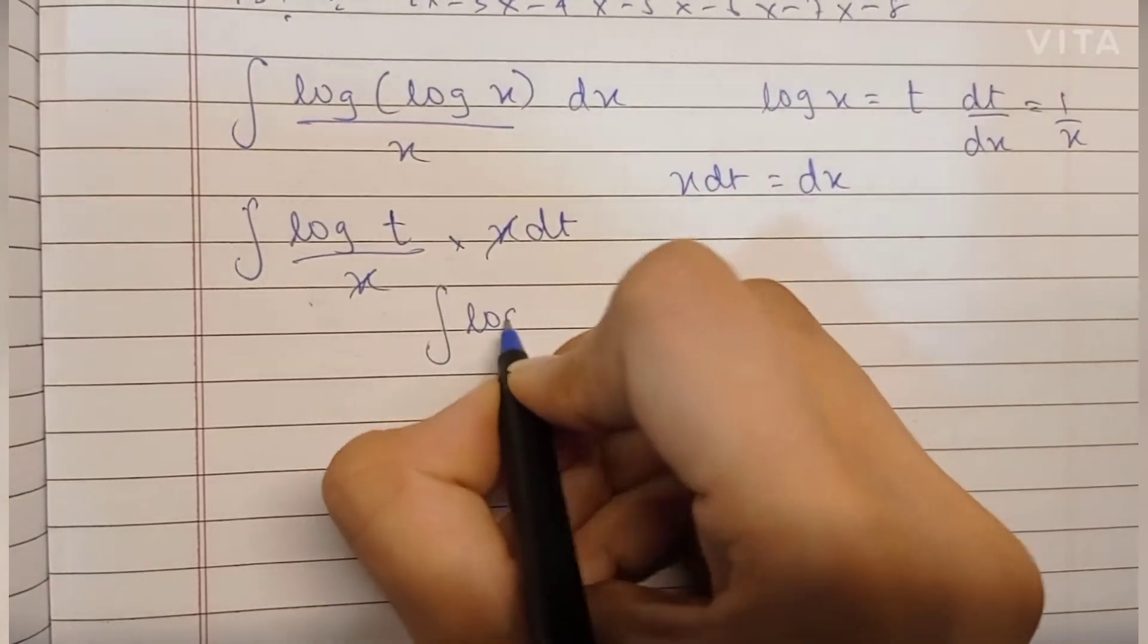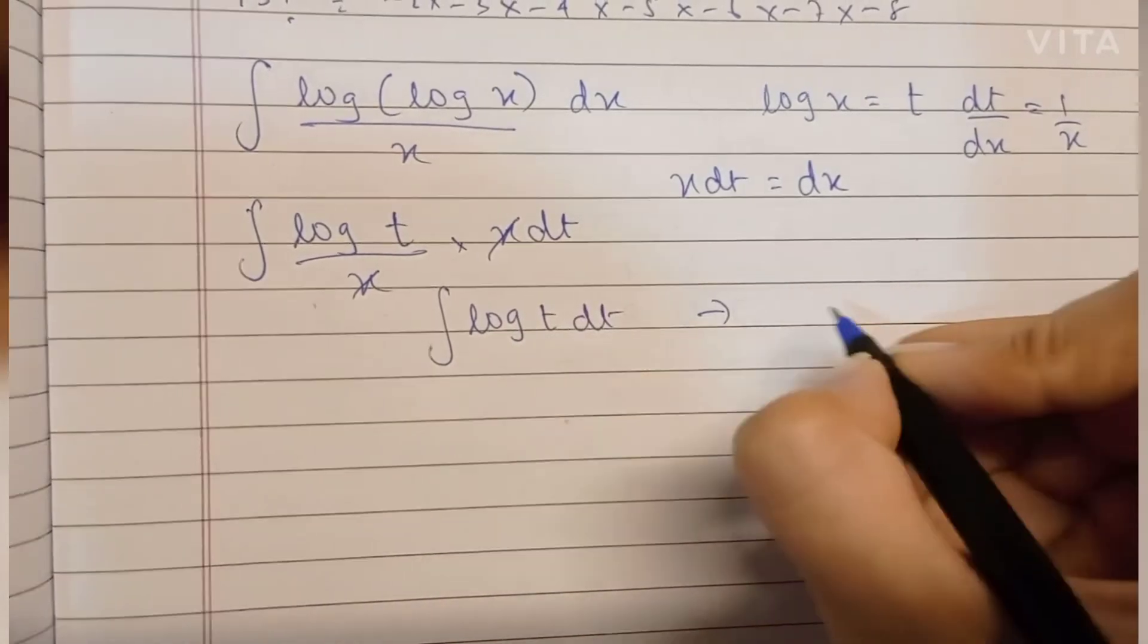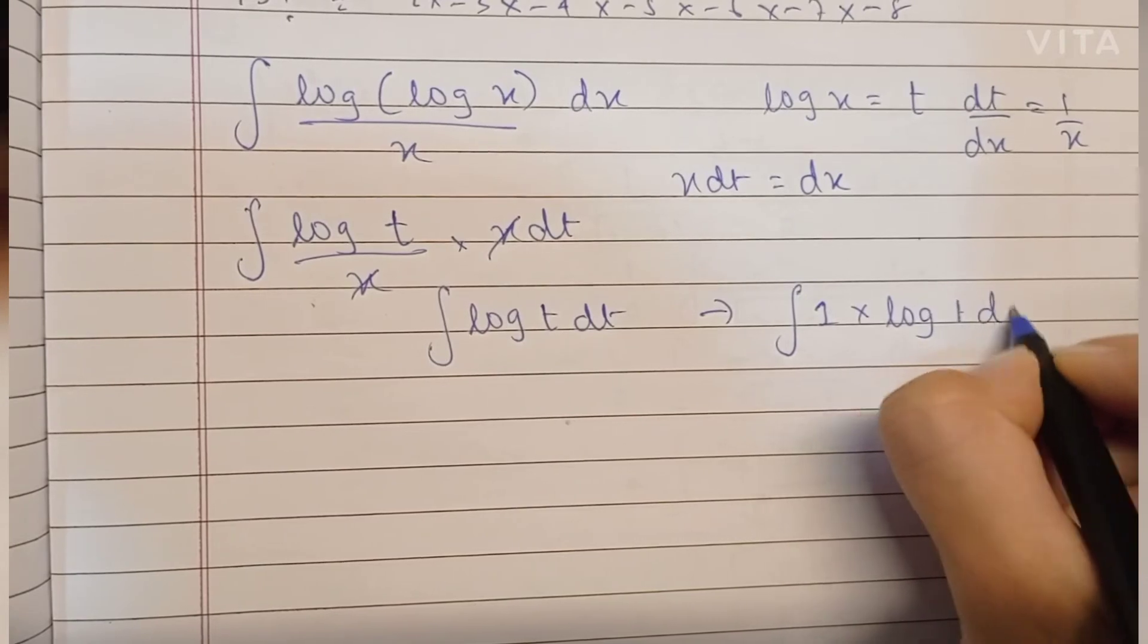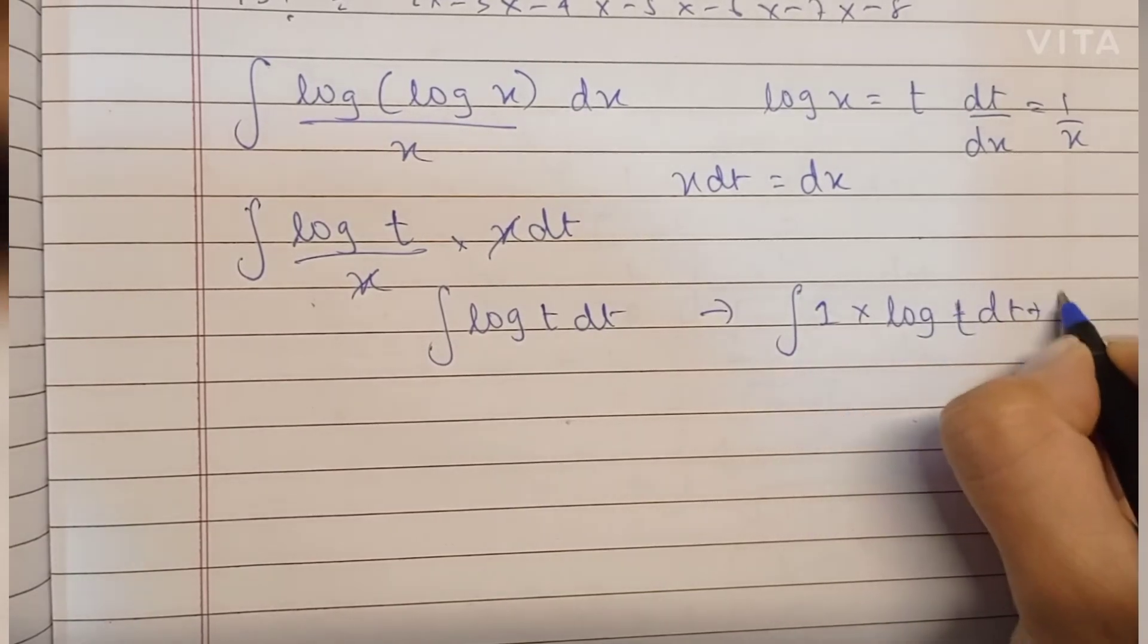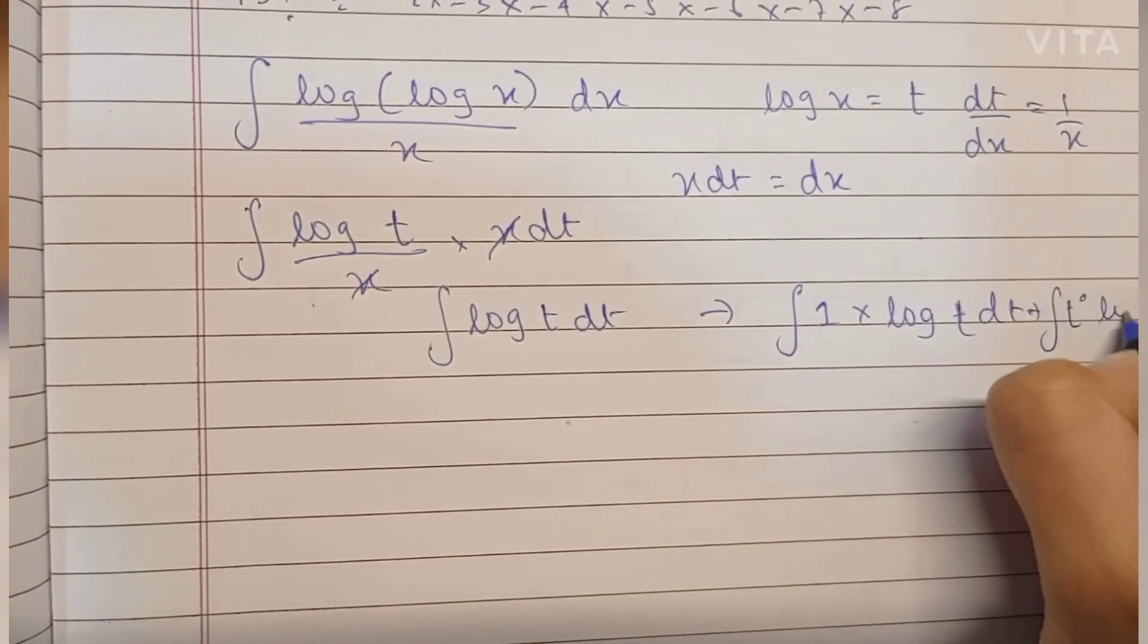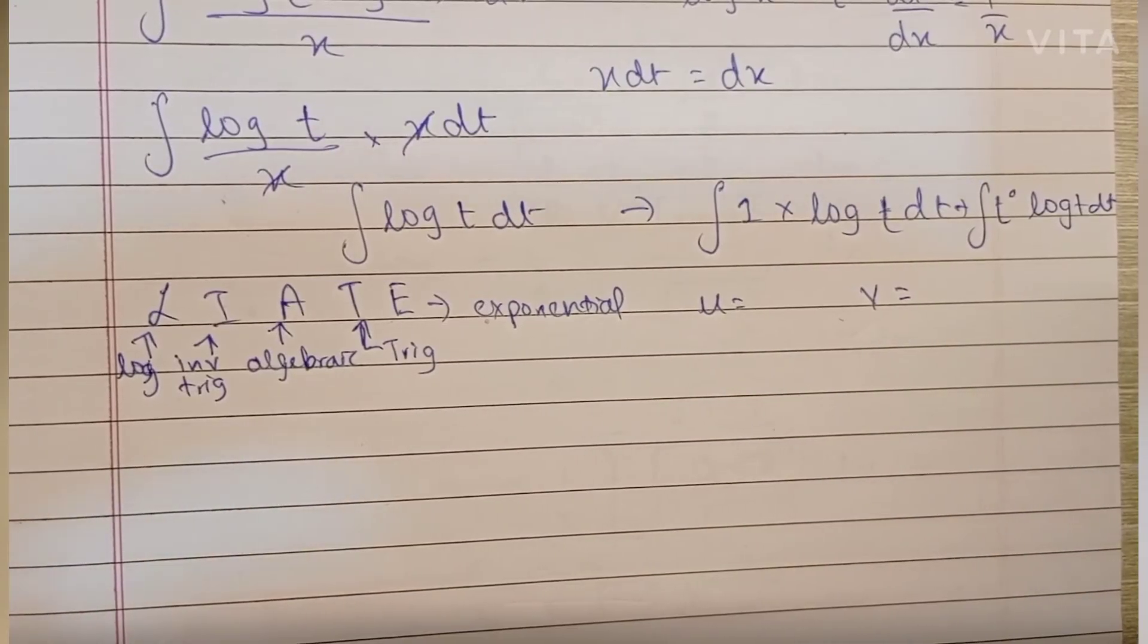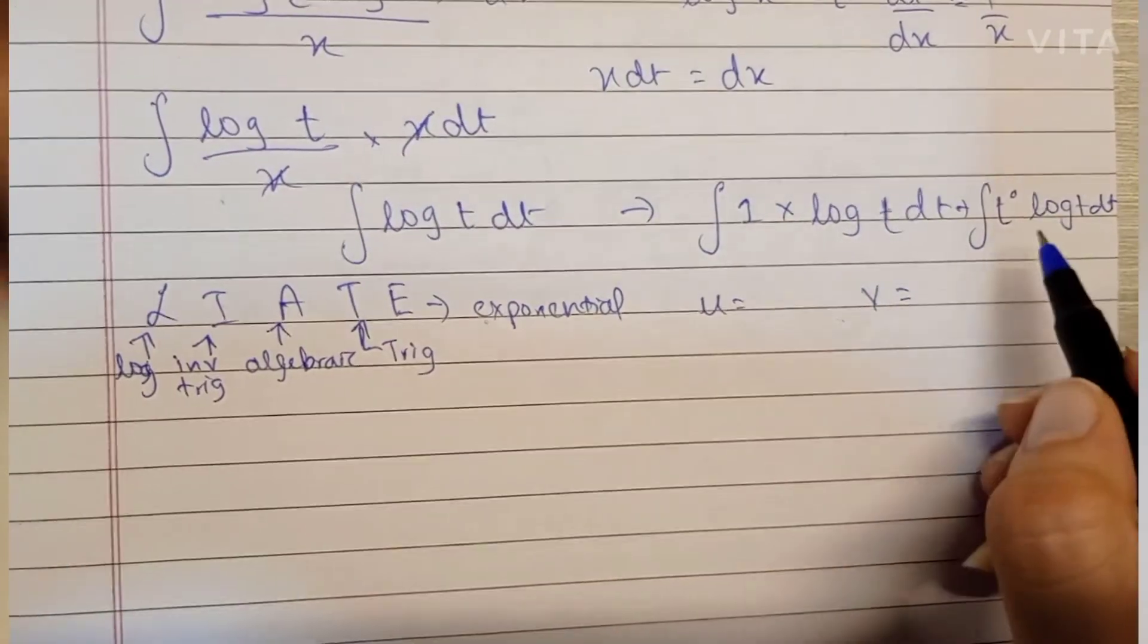Of log t before, log t is basically 1 into log t dt, and 1 can be written as t raised to 0, so log t dt.